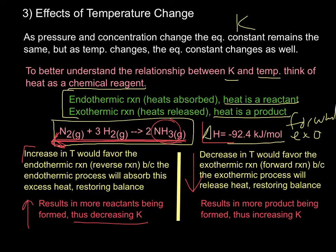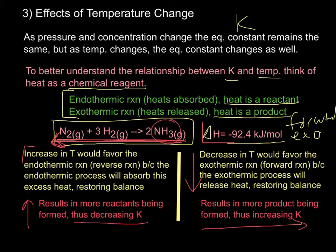Conversely, if you decrease your temperature, it would favor the exothermic reaction — the forward reaction — at negative 92.4 kilojoules per mole change in enthalpy. This happens because the exothermic process will release heat and restore balance. If I decrease the temperature, I want to restore balance by generating more heat, which is the exothermic process's job. That favors the forward reaction towards your products, so equilibrium shifts to the right, N2 and H2 will form more NH3, resulting in your K value being high.